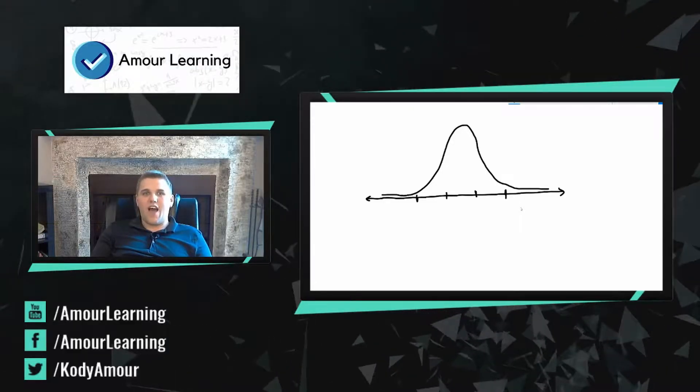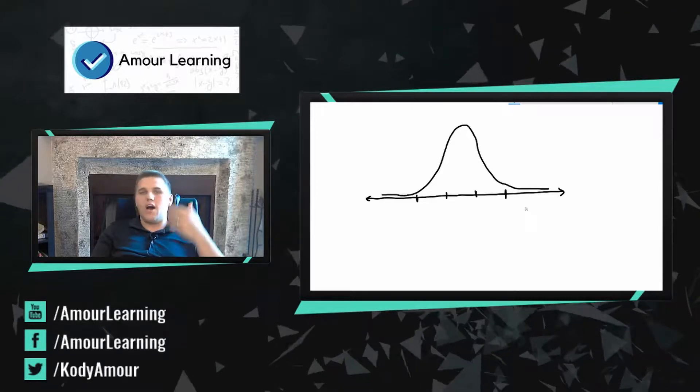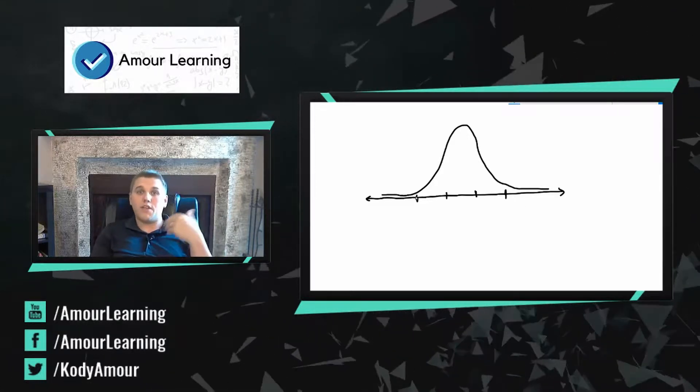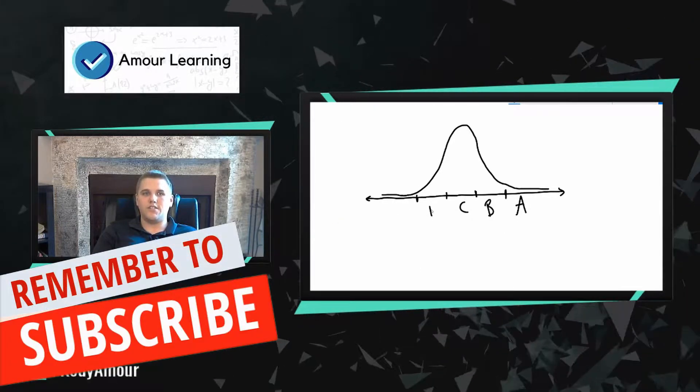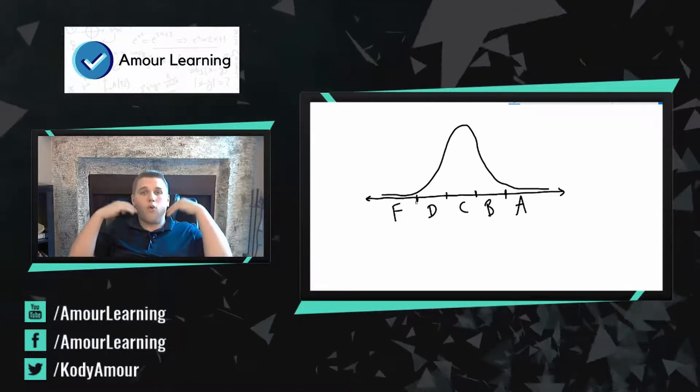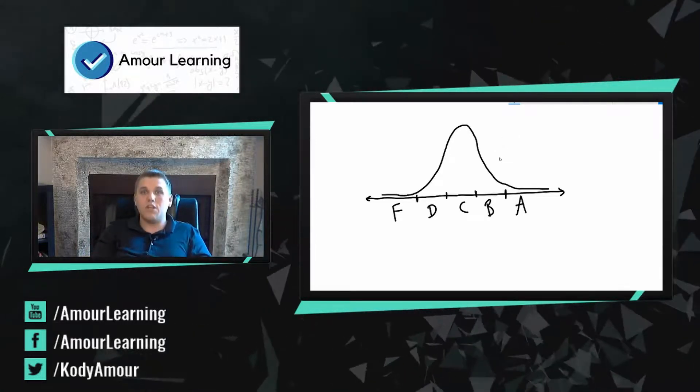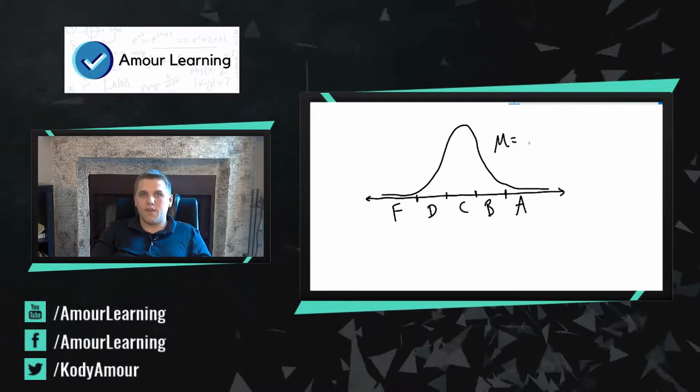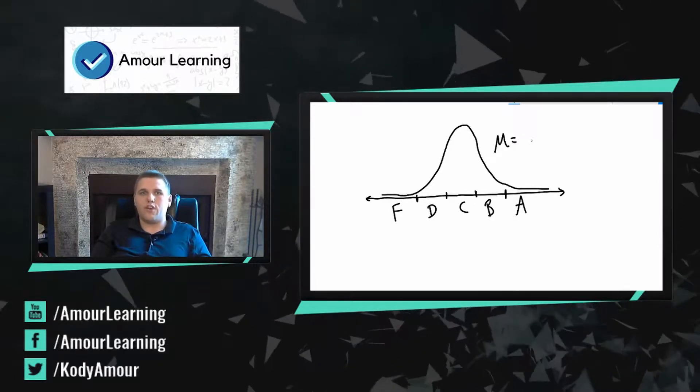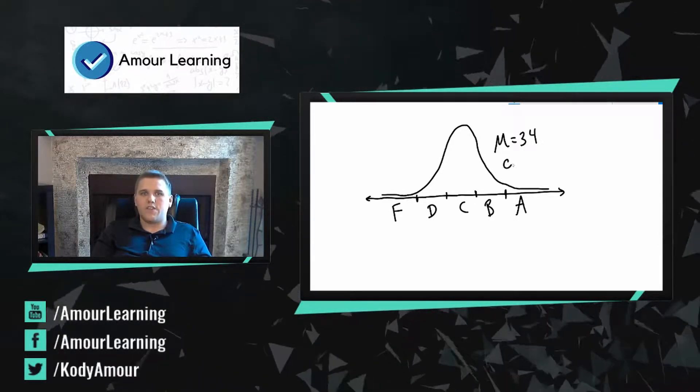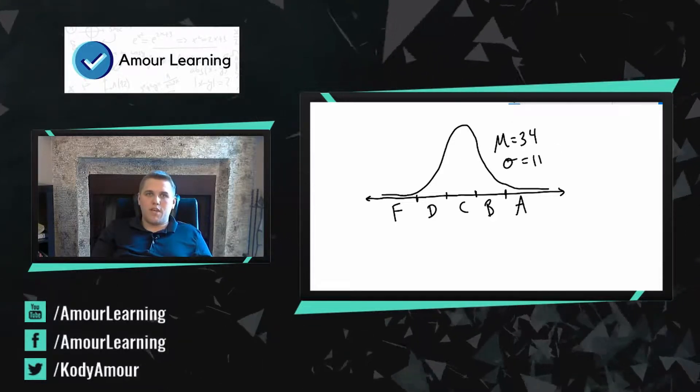Alright, so we're trying to figure out how to grade a test, and it's a very common problem that instructors and professors face. This to me would be the ideal way of grading a test. So we have typically five letter grades: we have our A's, our B's, our C's, our D's, and our F's. Now when you're grading on a bell curve, this is probably the best way of grading because tests tend to be normally distributed. So you're going to have an average. Let's say you have a really bad test and the average was like 34%. And the standard deviation let's say is pretty small like 11%.